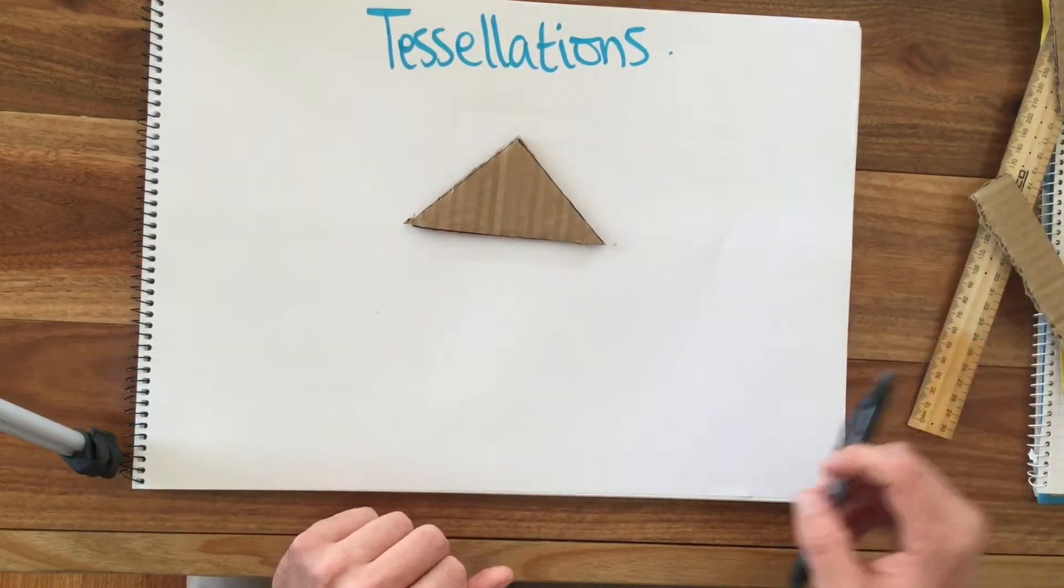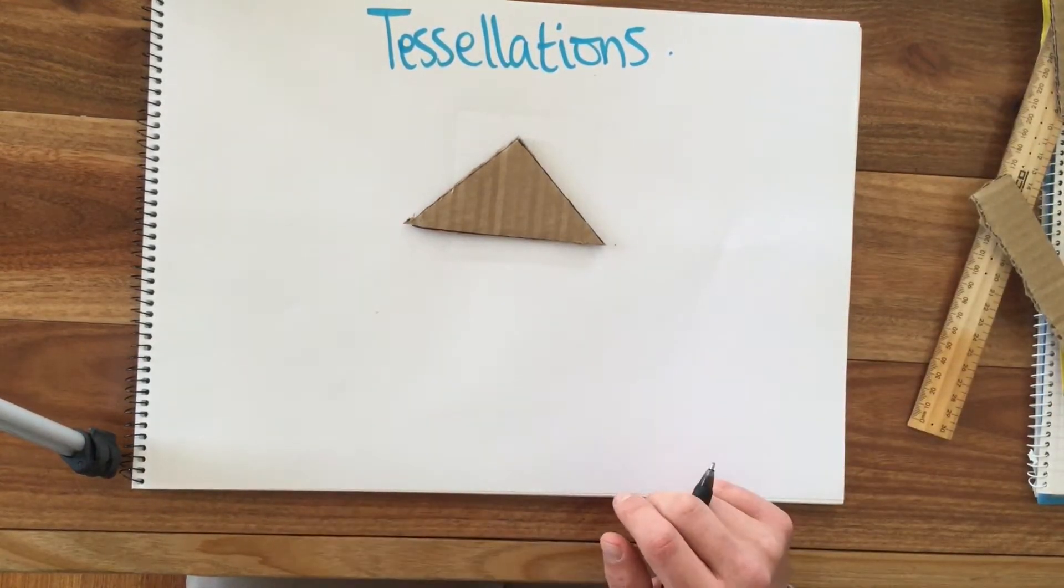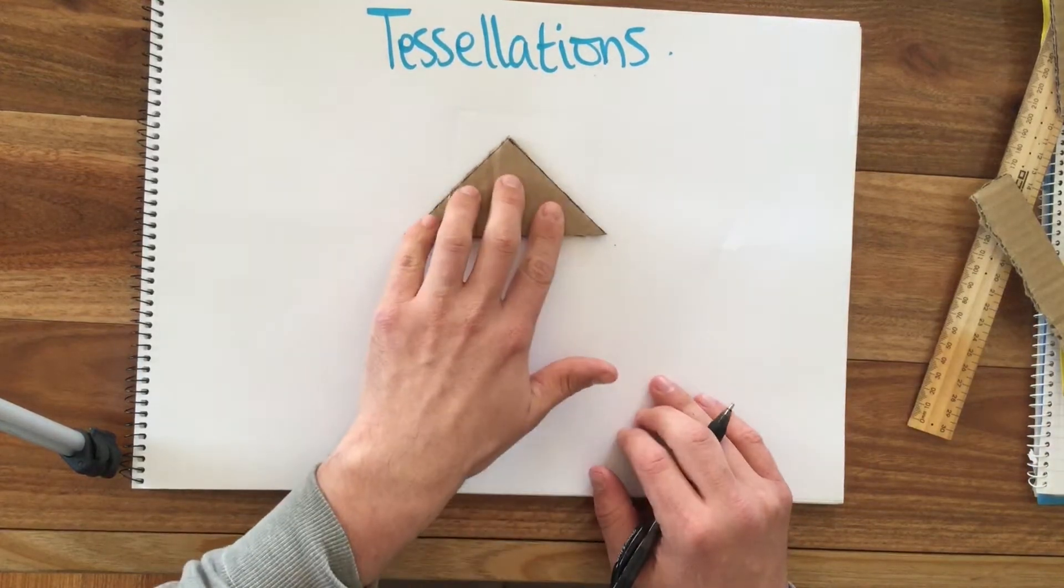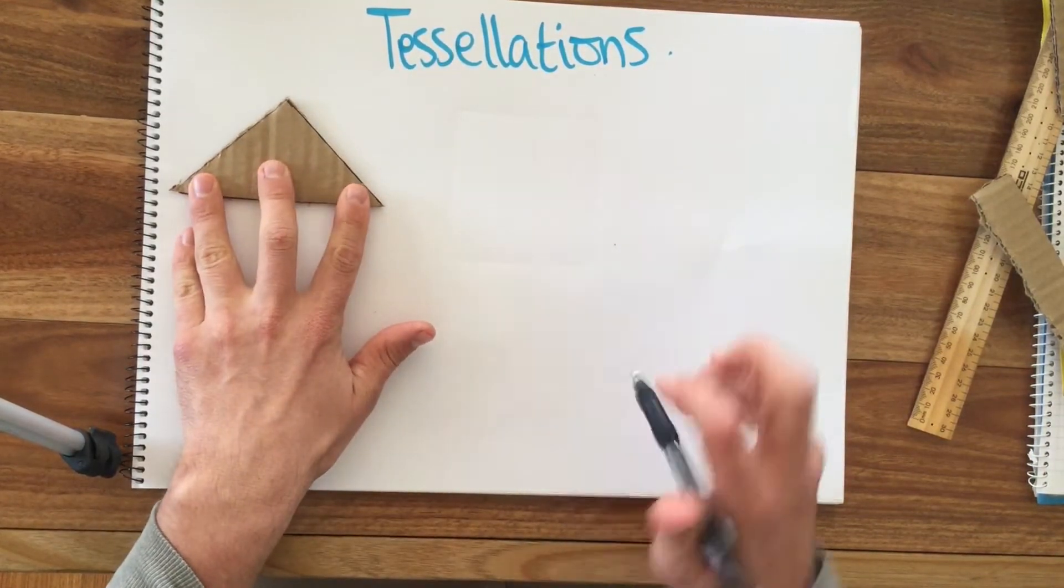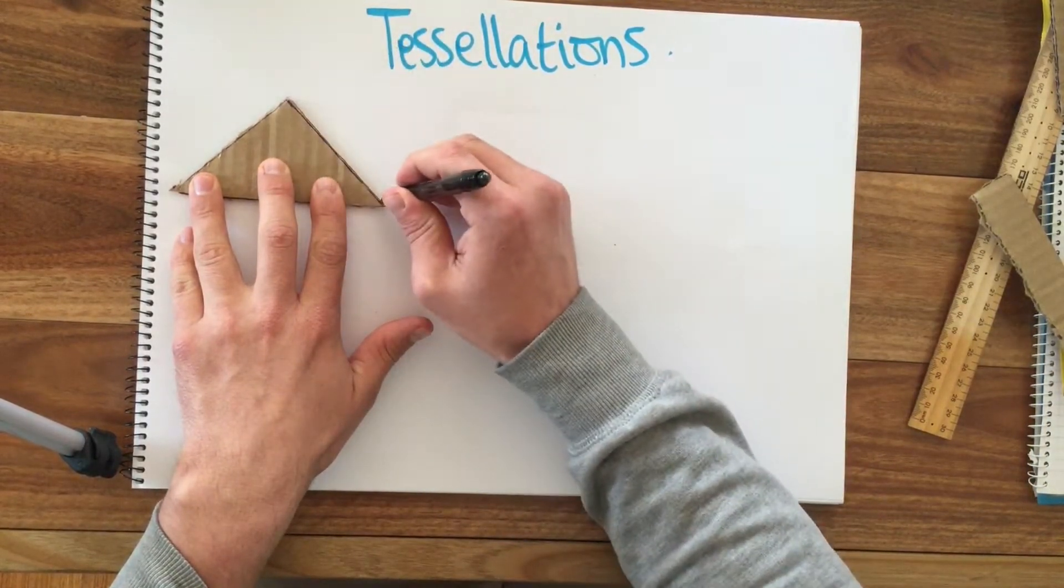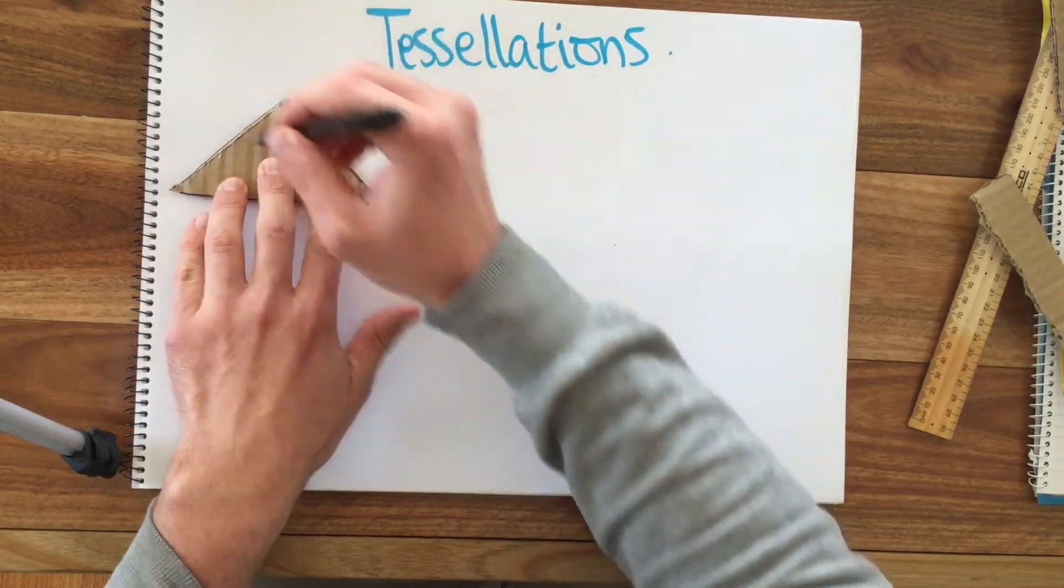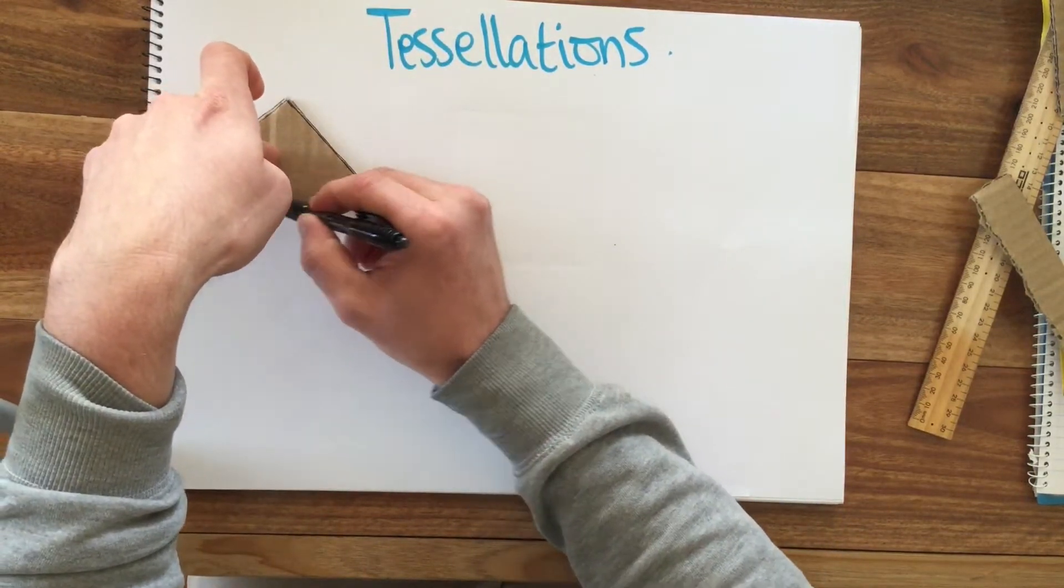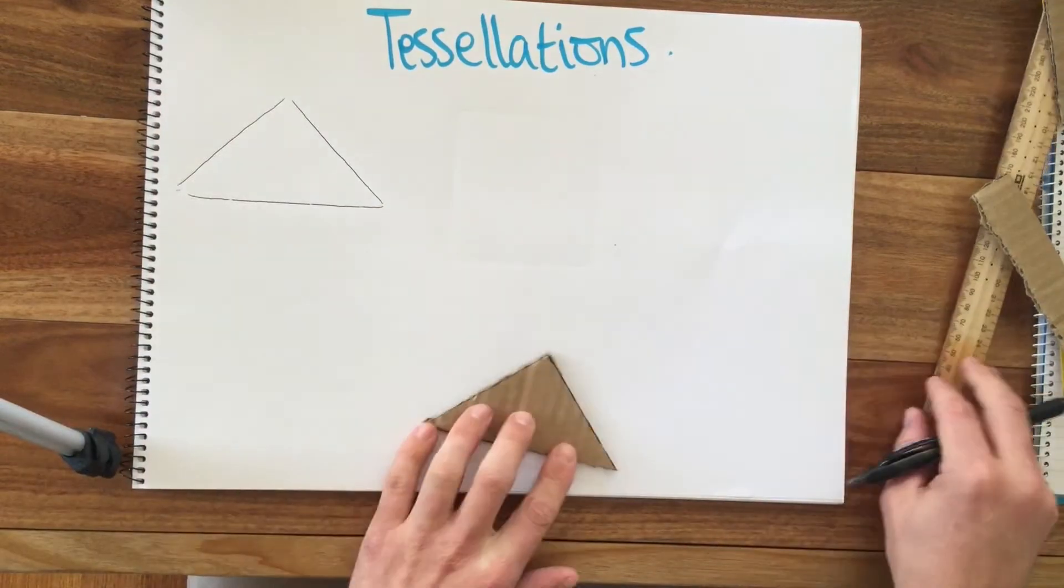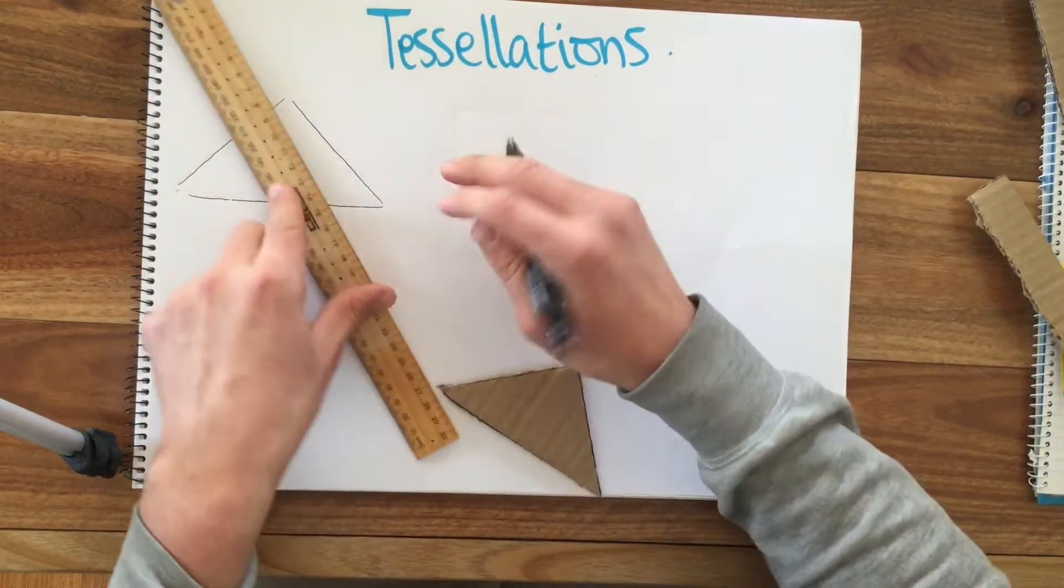For this tessellation I'm going to use a triangle. It's one of our regular polygons that can create a regular tessellation. I'm going to start at the side and trace around as neat as I can. You might want to use a pencil.